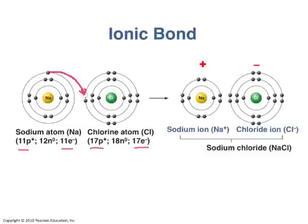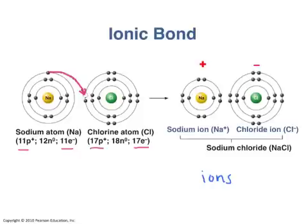These atoms now have charges. The atom that lost an electron now has one extra proton and a positive charge. The atom that gained an electron now has one extra electron and a negative charge. Atoms with a charge are called ions. That's why it's called an ionic bond — because it makes ions. In table salt, sodium becomes the positively charged ion, and chlorine becomes the negatively charged ion, called chloride.